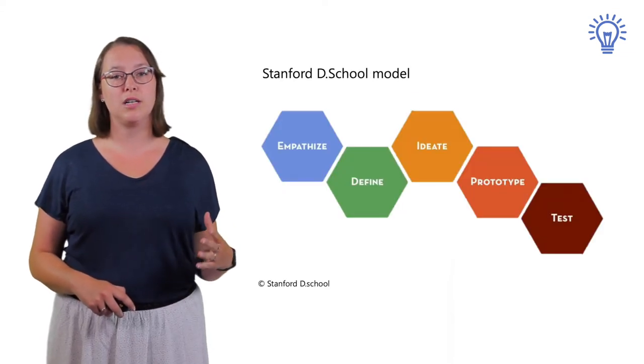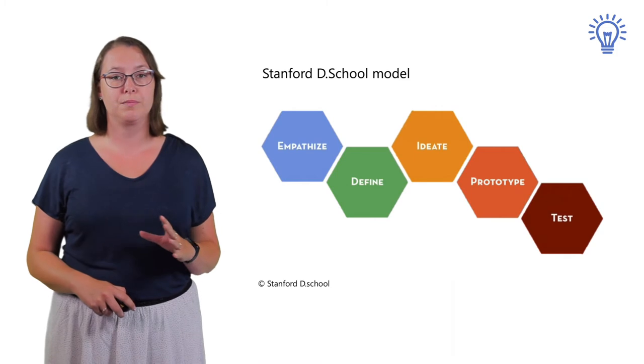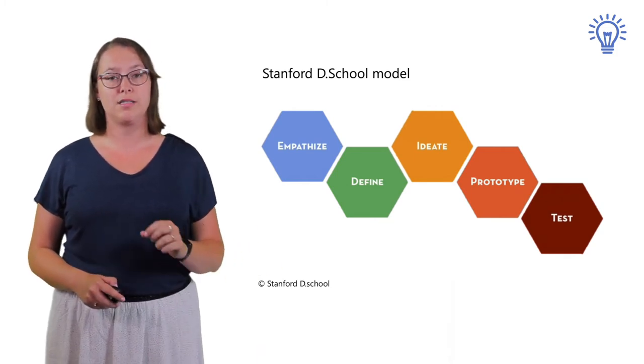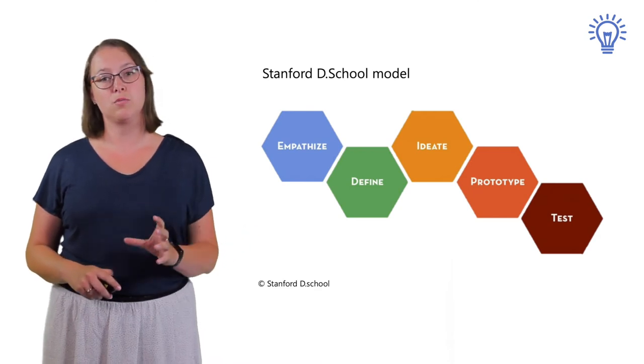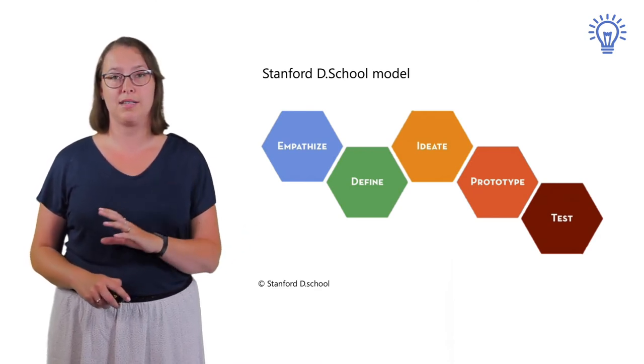The next model is the Stanford D.School model. This one consists of five phases. You can see that Empathize and Define are two separate steps, and there is more emphasis on prototype and testing.